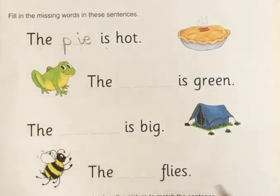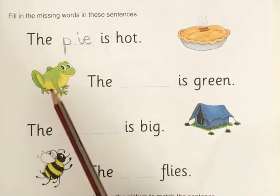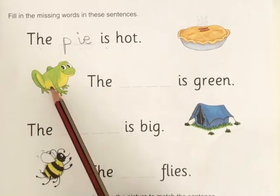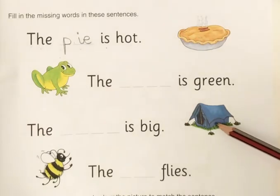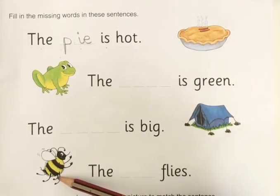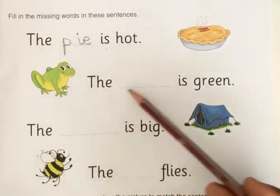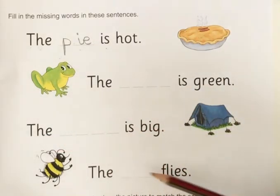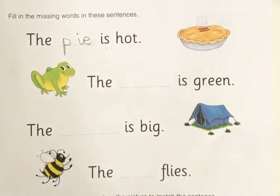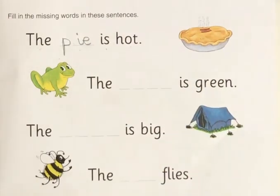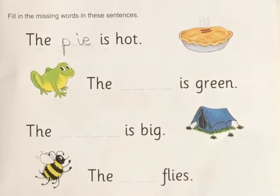This is a frog. This is a tent. This is a bee. You have to read the sentences and fill in the missing word. I've done the first one for you, so you have to do the three remaining ones by yourself. Thank you.